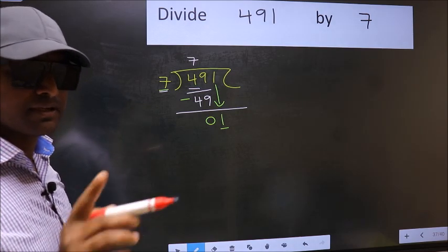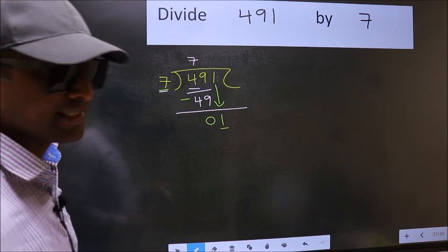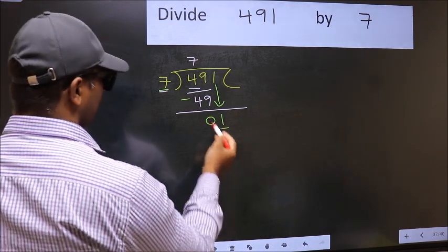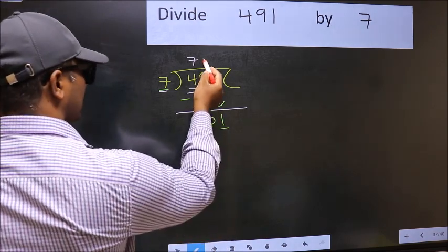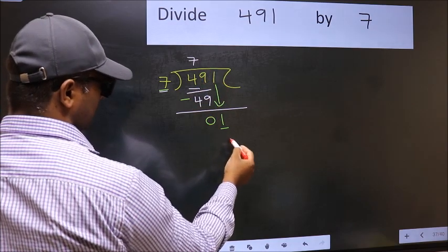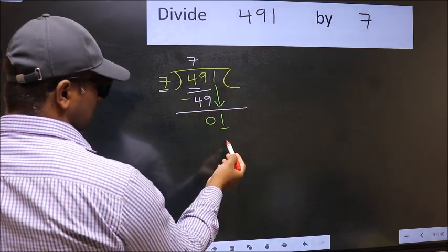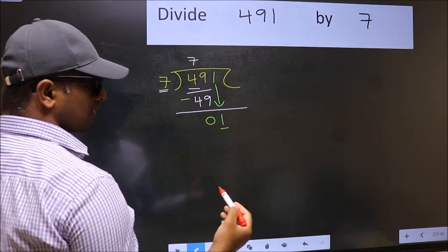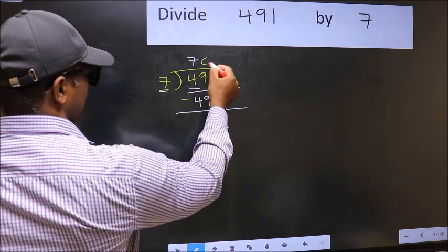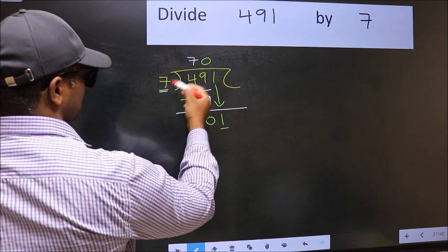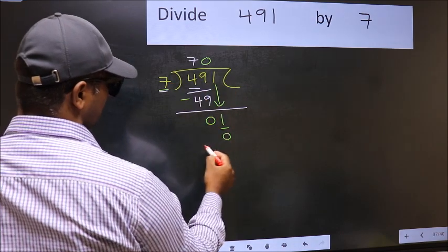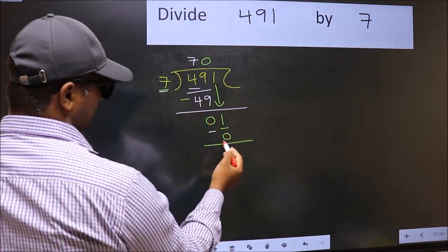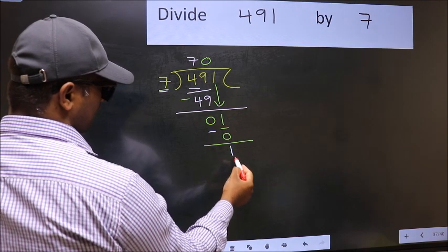Instead, what you should think is: what number should we take here? If I take 1, we will get 7, but 7 is larger than 1. So what we should do is take 0. So 7 into 0 is 0. Now you should subtract: 1 minus 0 is 1.